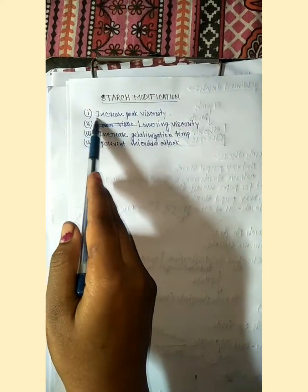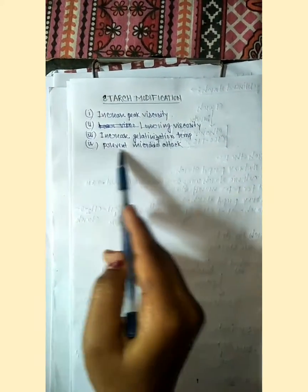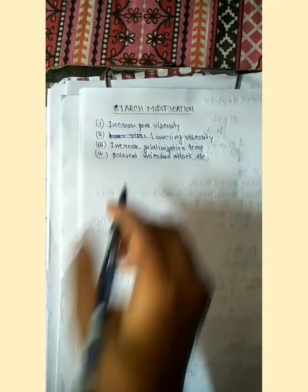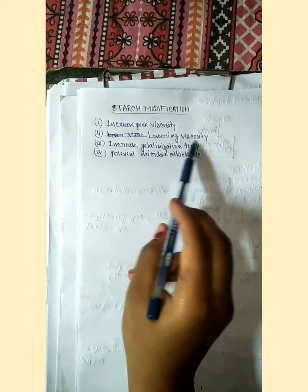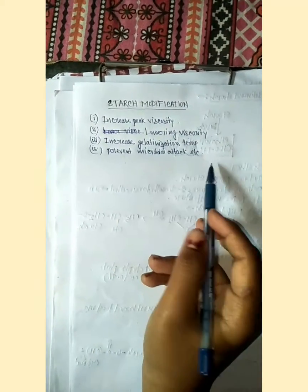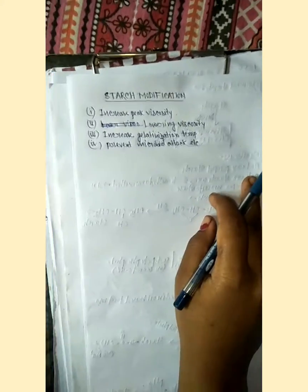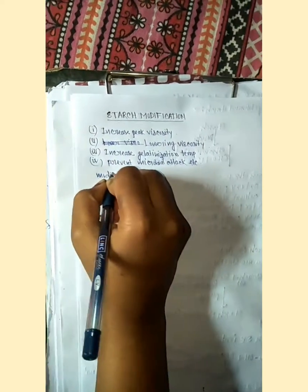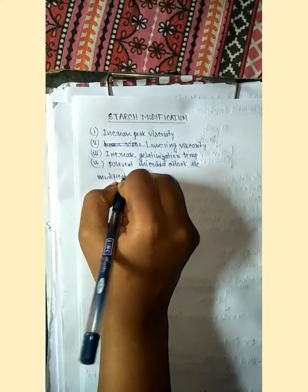Starch modification is done for four reasons: increase in peak viscosity, lowering viscosity, increasing stability to deterioration temperatures, and preventing microbial attack.